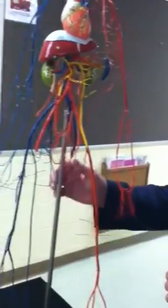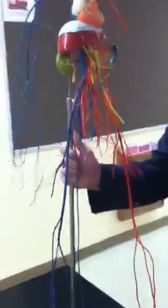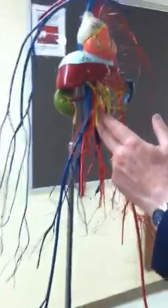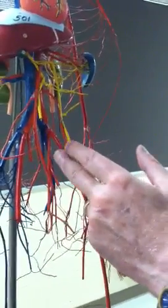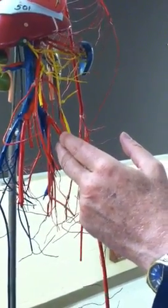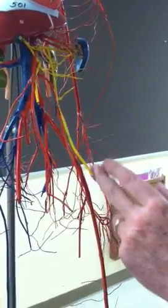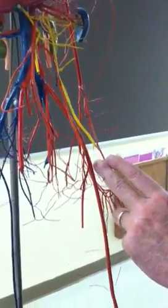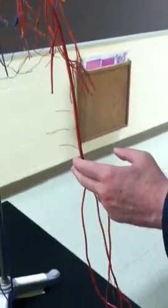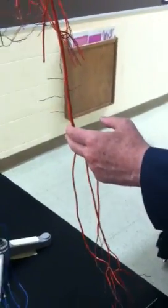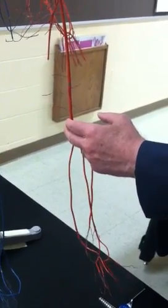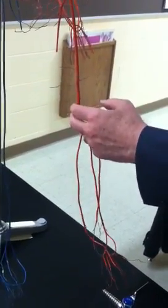When we look at the lower extremity, again, at the bifurcation common iliac, it branches into an internal iliac and an external iliac. And then it crosses into the thigh and becomes the femoral as it parallels the femur. And we get to the back of the knee, where we have that depression, where we flex. And that's the popliteal fossa, so that's the popliteal artery.